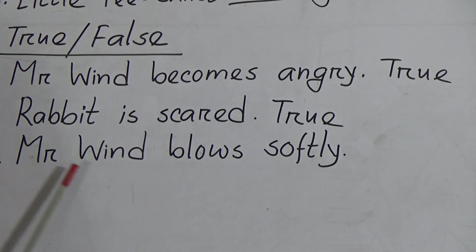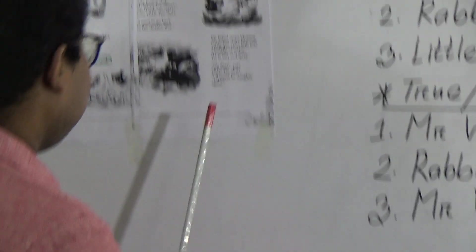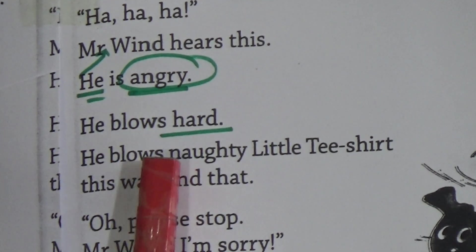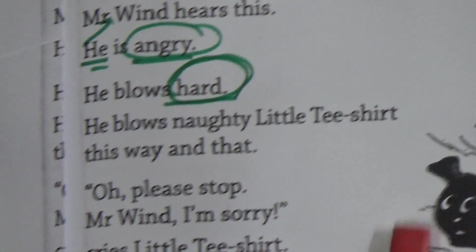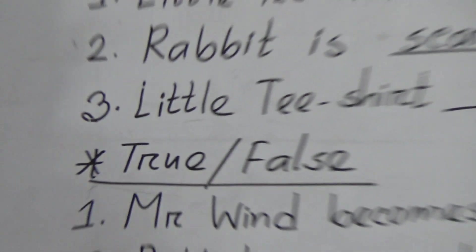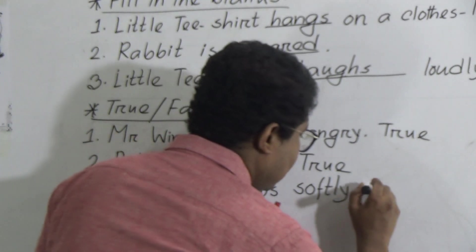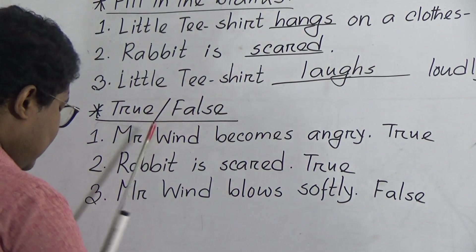Number three: Mr. Wind blows softly — true or false? Let's go to the text. He is angry, he blows hard — hard means strongly, not slowly. You can see in the picture also: Mr. Wind blows very strongly. So sentence number three, 'Mr. Wind blows softly,' is false because Mr. Wind blows hard. False — F-A-L-S-E.